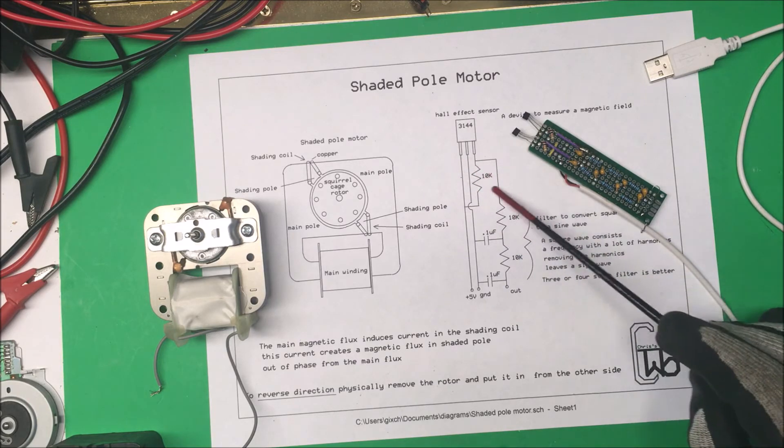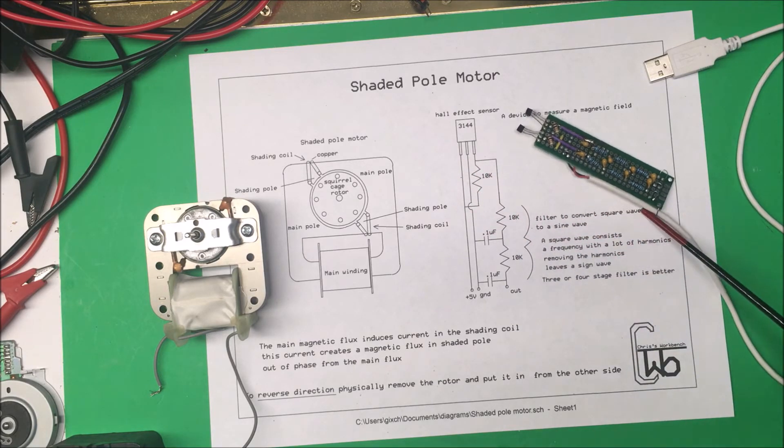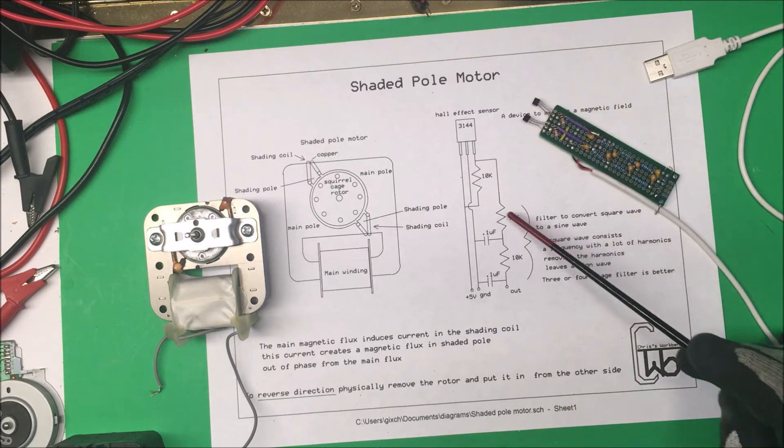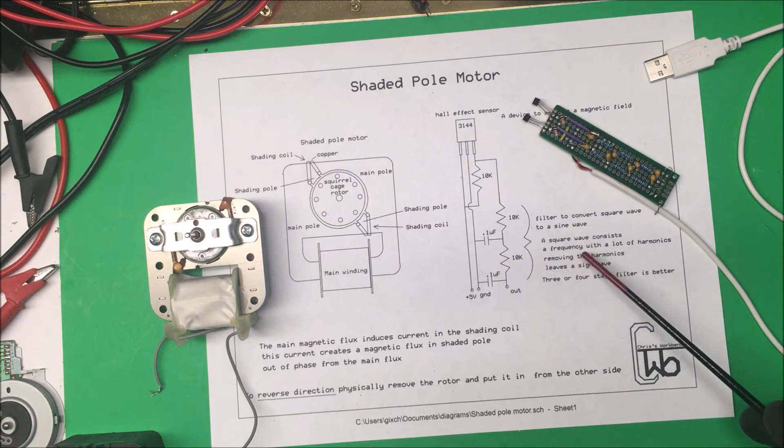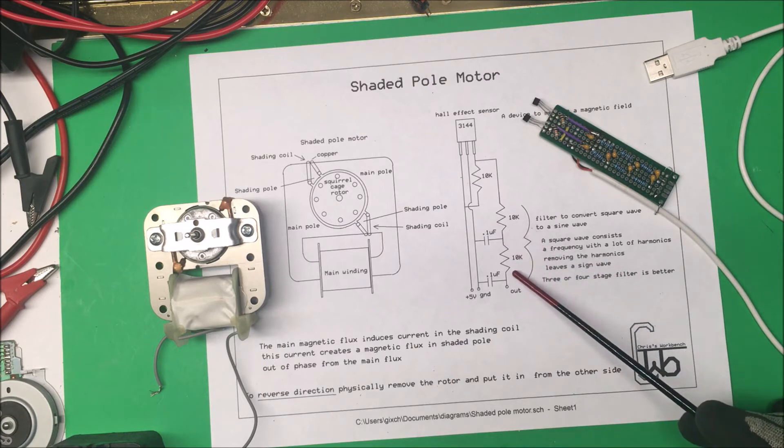I used a little filter here, and a filter converts the square wave into a sine wave. Now, a square wave just consists of a frequency with a lot of harmonics, and if you remove those harmonics, it leaves a sine wave.